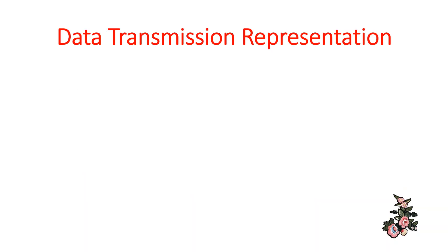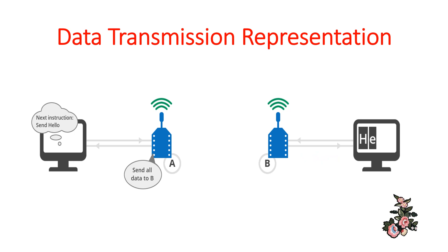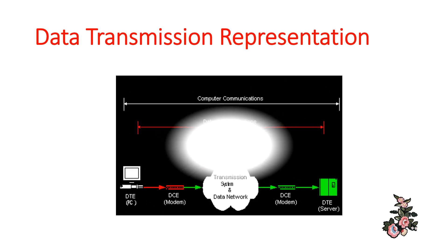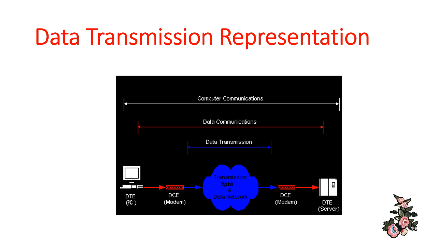A data transmission representation diagram is shown. From one device, the hello message is transmitted to the other device, as indicated in this diagram. Here is also a representation of data transmission through the internet. The data is available in the center and has to reach the receiver through the internet or any transmission medium or data network.